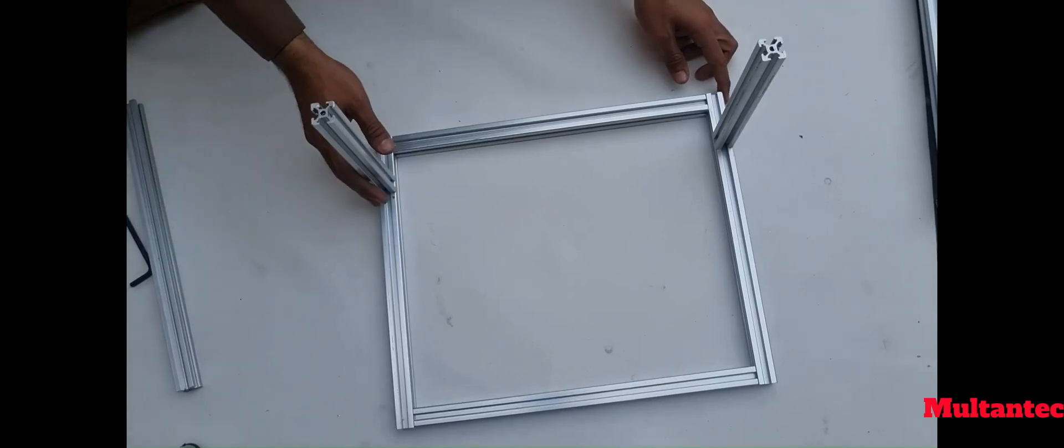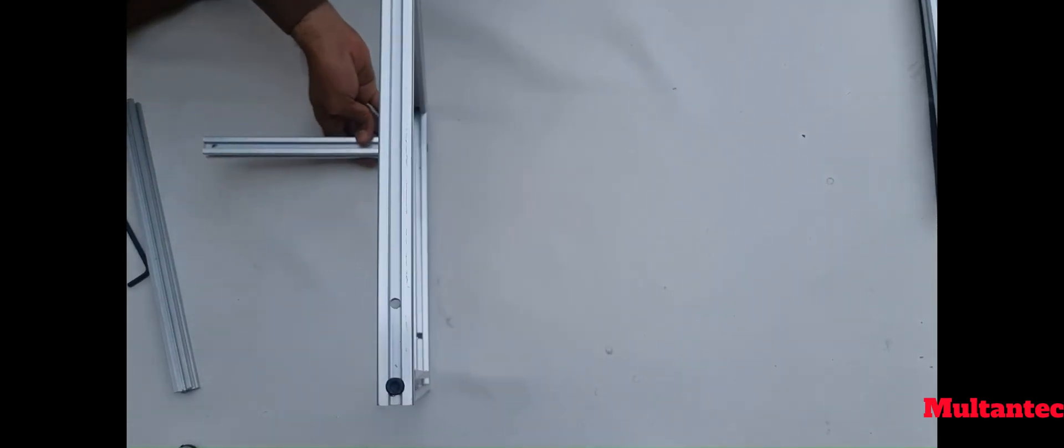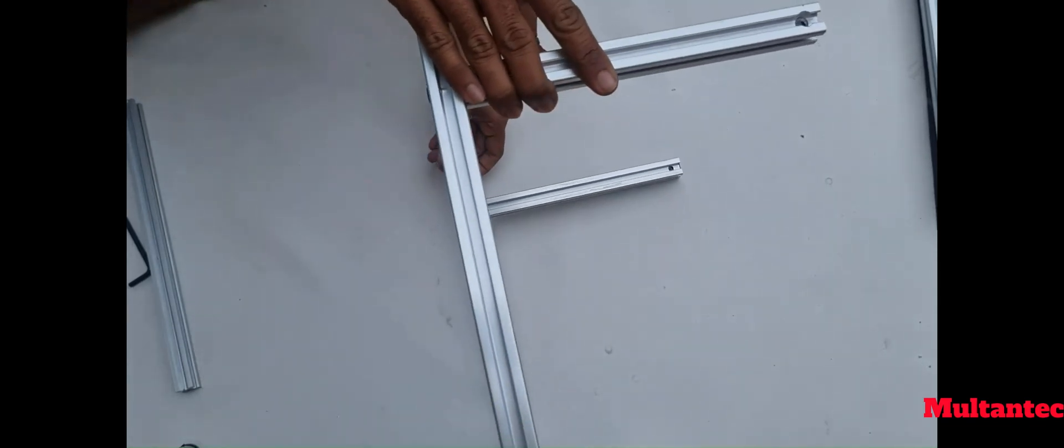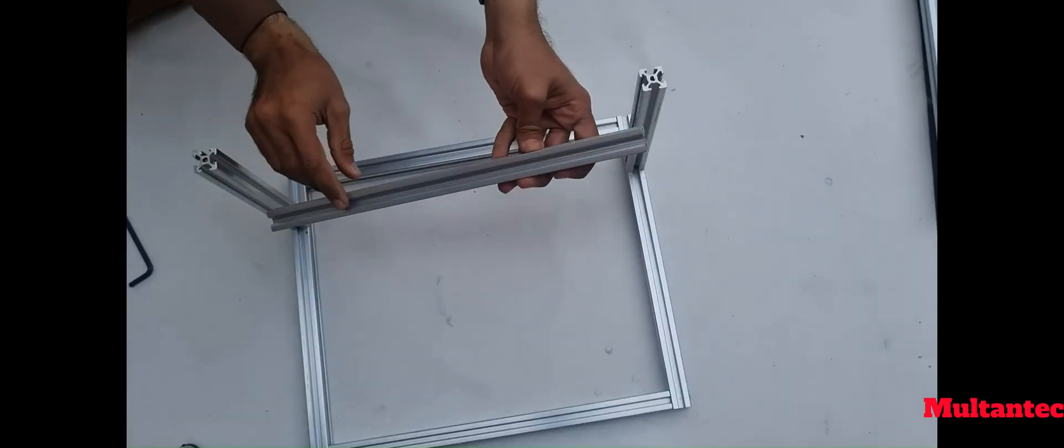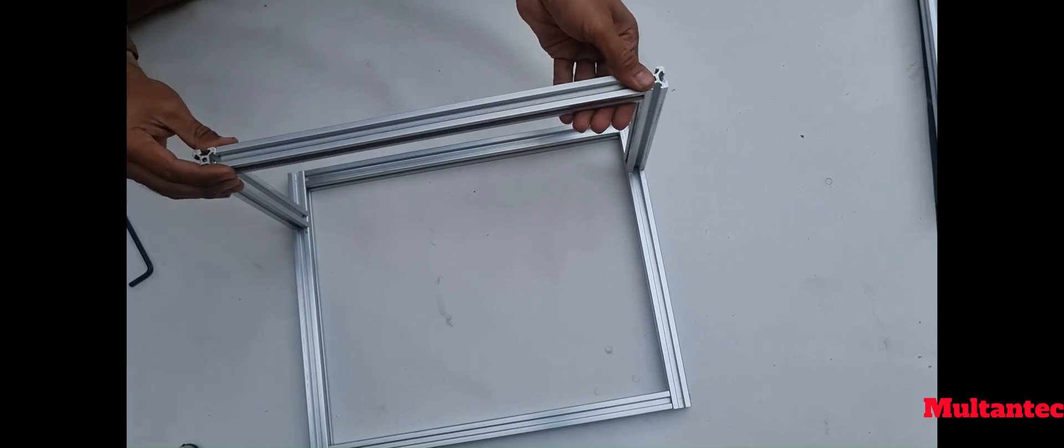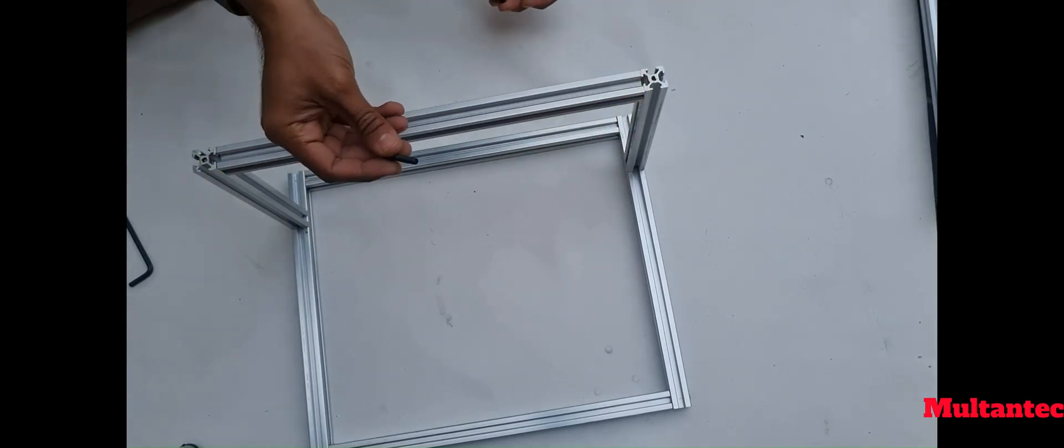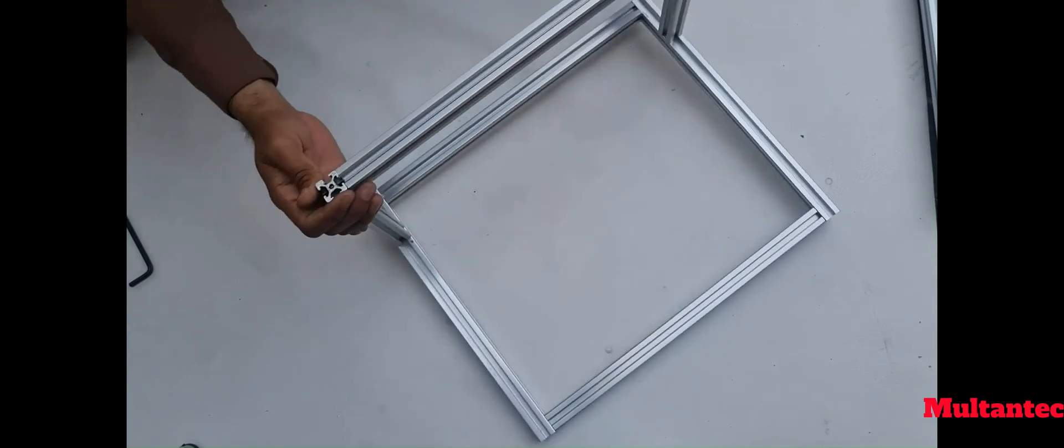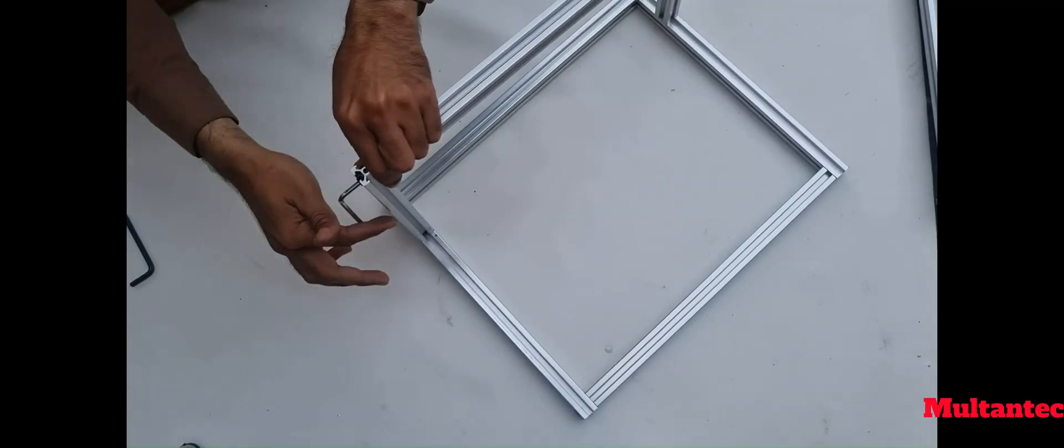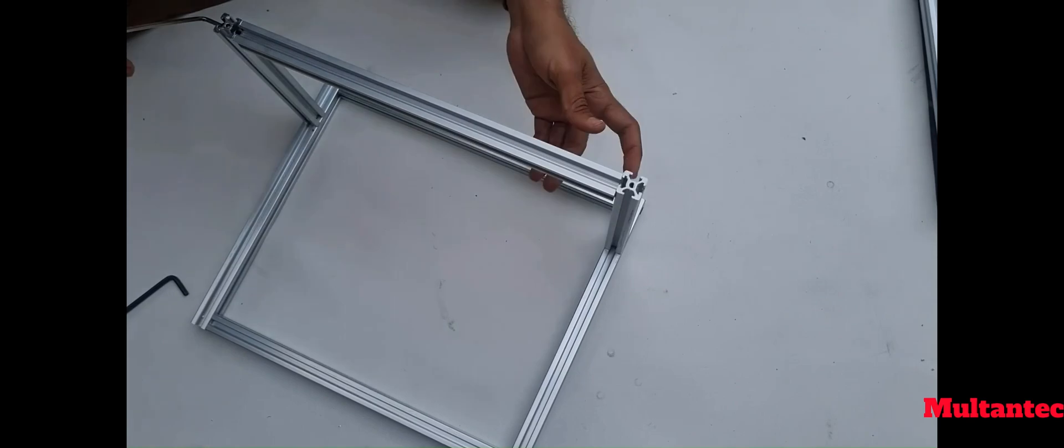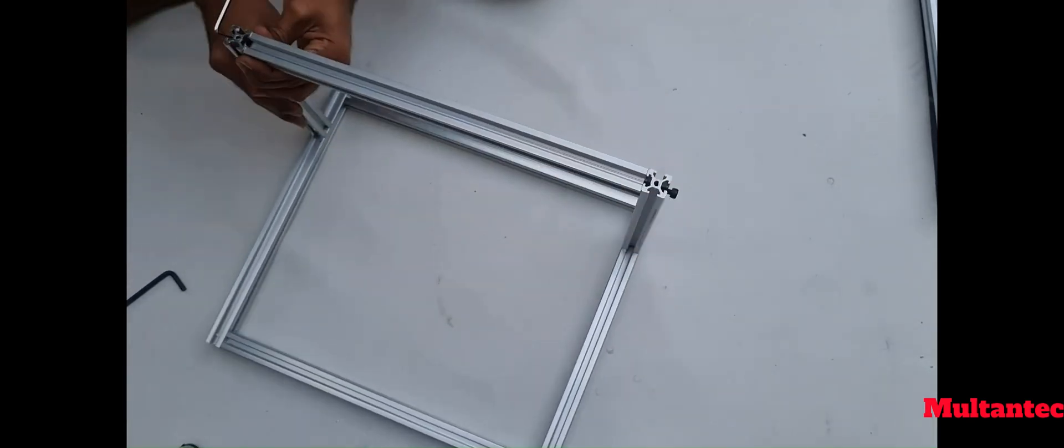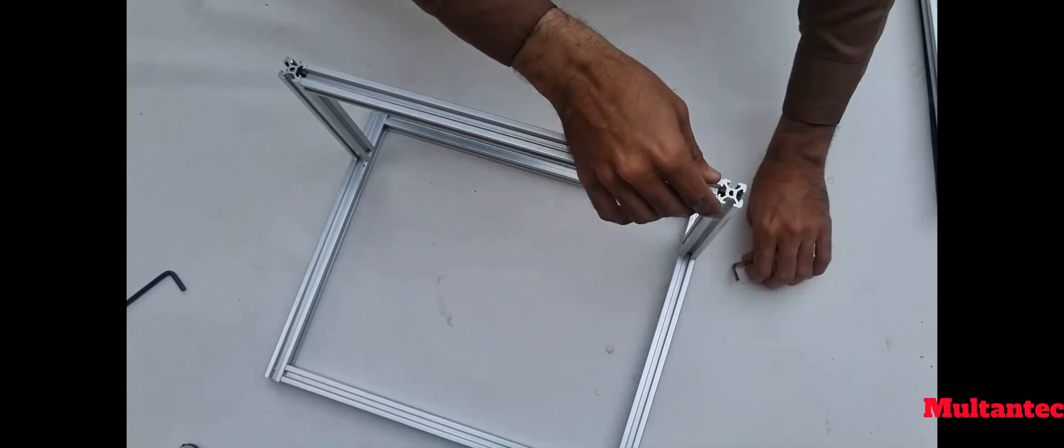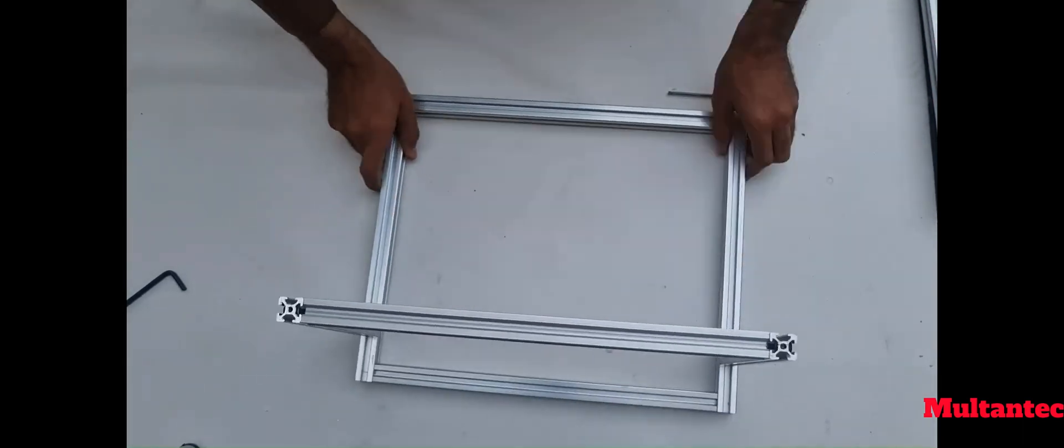Make sure the X-axis legs are straight and aligned with base frame. You can use a tri-square to check it. I have another 330mm profile tapped M5 on both edges. I am using a single profile to join the X-axis frame just to reduce the cost. So our frame is ready now.